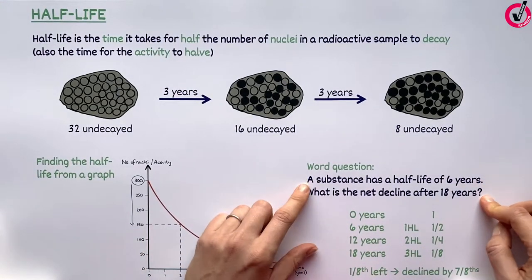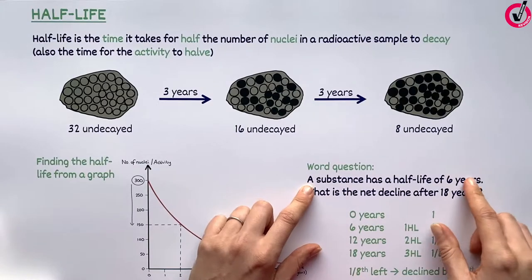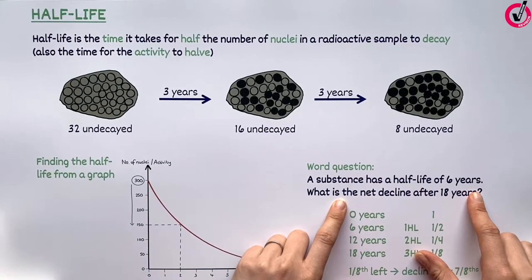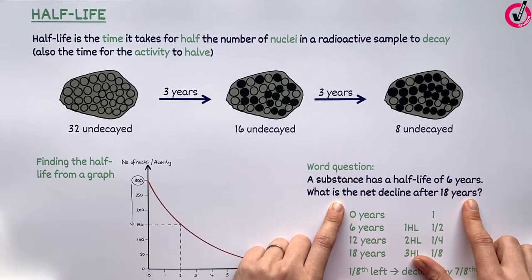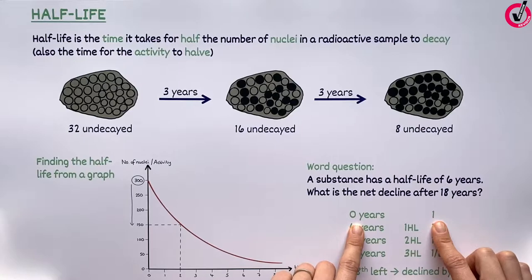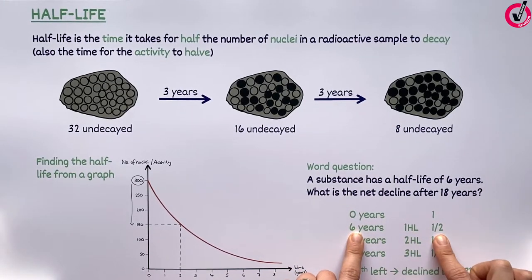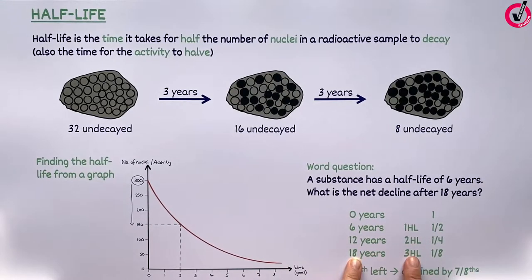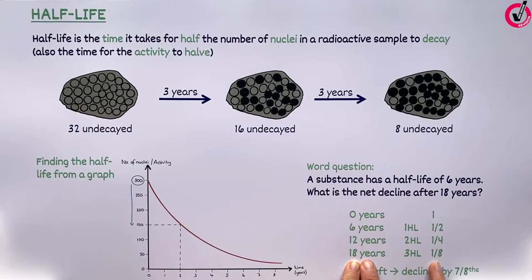On a higher-tier paper, you might be asked to calculate the decline after a certain number of half-lives and express this as a ratio. For example, if the half-life of a substance is six years, what is the net decline after 18 years? We can take this a half-life at a time. At the start — zero years — we have the full amount, or one. After six years, one half-life, it's gone down by half. After 12 years, two half-lives, it's gone down by half again, so we have a quarter left. After three half-lives — 18 years in total — it's gone down by half again, so we have an eighth left. After 18 years, we have an eighth left; it has declined by seven eighths.